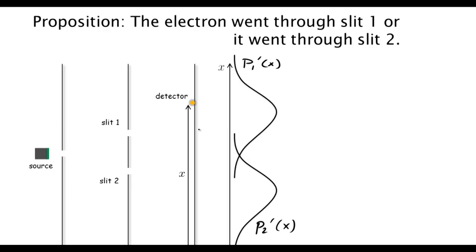This was the curve we got when we closed slit 2, and this is the curve we got when we closed slit 1. But now, since both slits have been open, surely the probability of an electron ending up at X is the sum of p1' and p2'. How is nature going to escape this and give us the interference pattern?